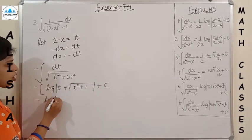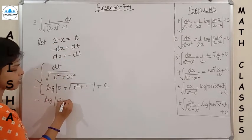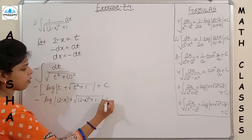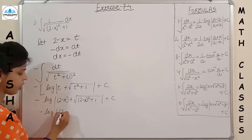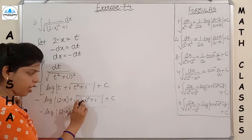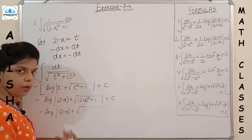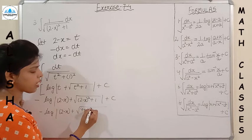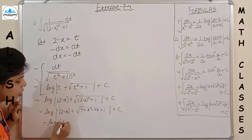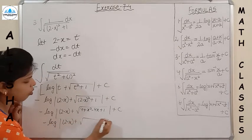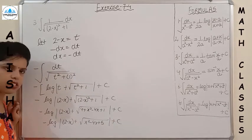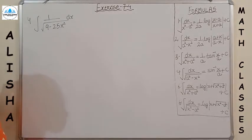Don't forget to put the value of t = 2 − x, giving −log|(2 − x) + √((2 − x)² + 1)| + C. Opening (2 − x)² using a² − 2ab + b² = a² + b² − 2ab gives 4 + x² − 4x, so the final answer is −log|(2 − x) + √(x² − 4x + 5)| + C.